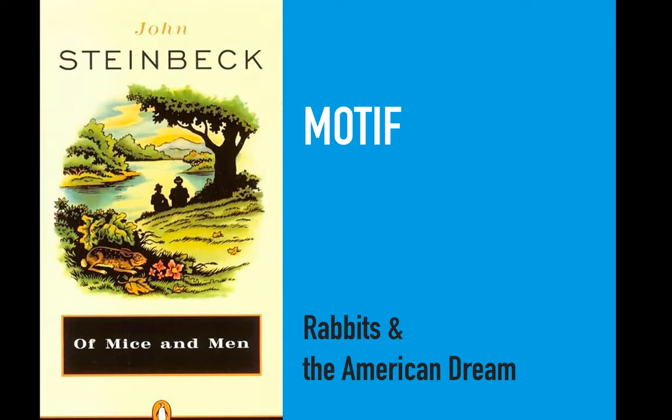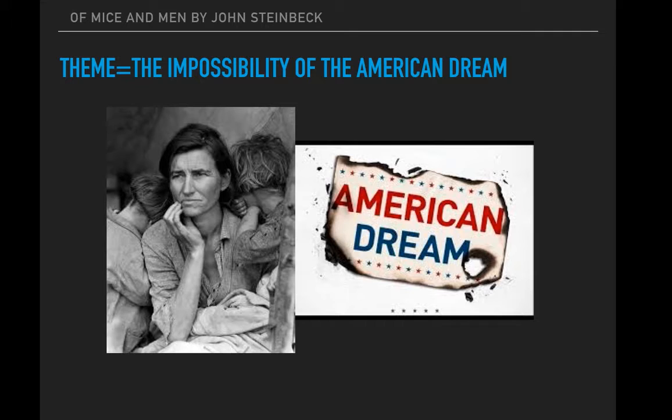Steinbeck in Of Mice and Men has an interesting technique with the rabbits and the theme of trying to achieve the American dream. The setting was in the Great Depression, and everyone, even today, has this American dream to own their own home, have some property, live well, and be happy. During the Great Depression, that wasn't possible for millions of Americans — it was quite impossible to achieve.